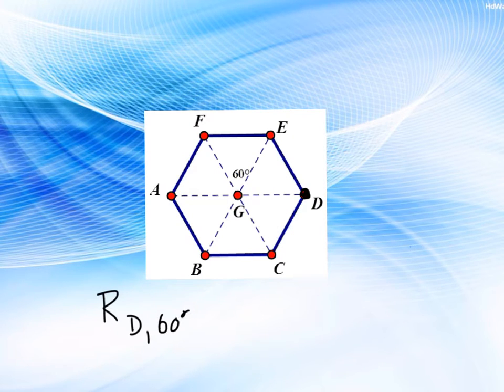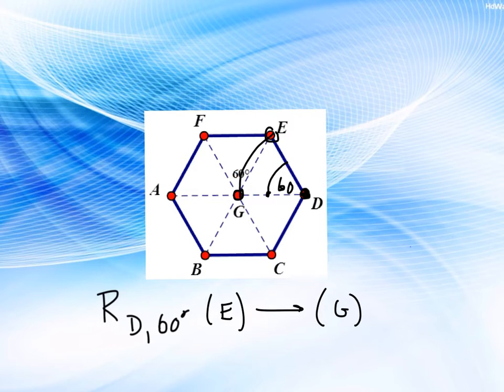So again, let's pick D as our center. And let's see where E goes if we rotate it by 60 degrees. Now remember, 60 degrees would be this amount right in here, and it would rotate in a counterclockwise direction. So E would move right to position G. It would land at G.